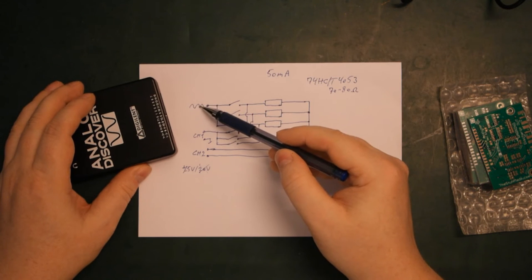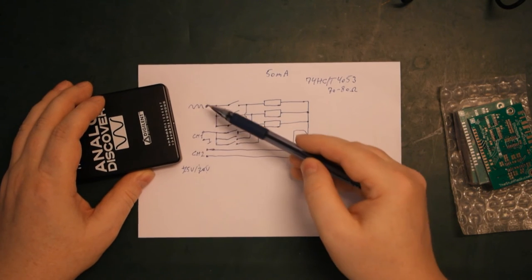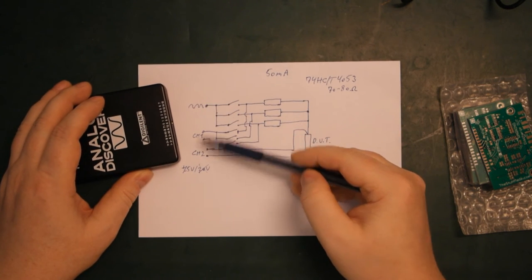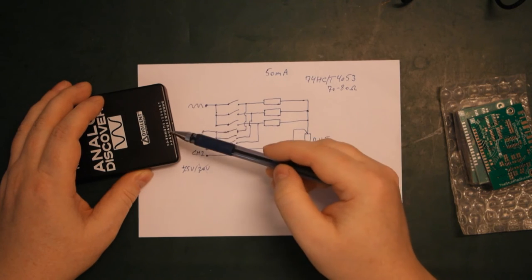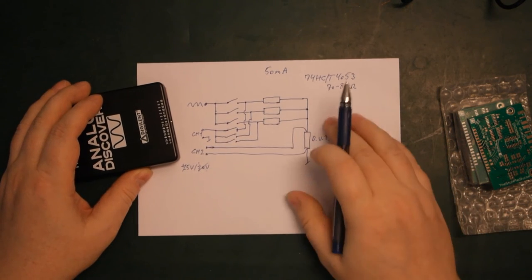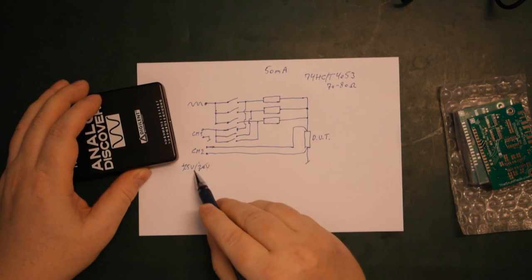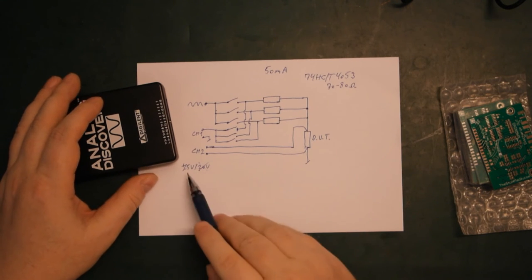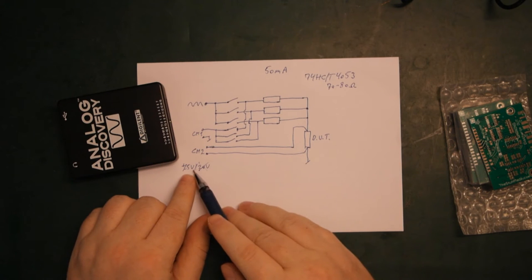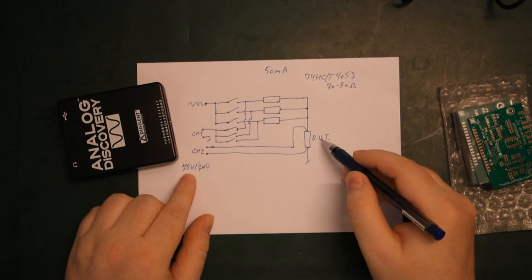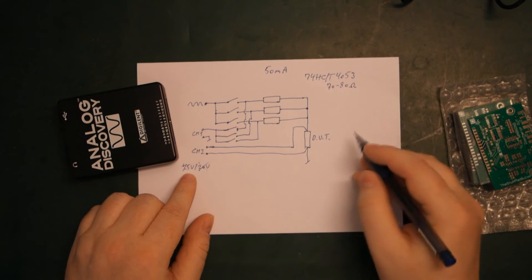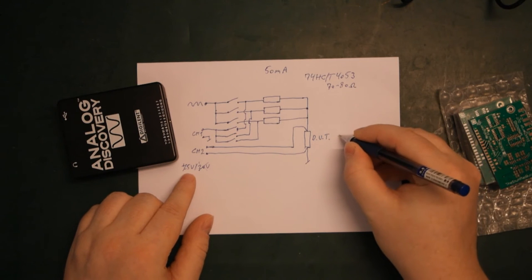The signal generator wave output here is never going to be more than plus minus 5 volts, because that's the absolute maximum it can output. So that is the only range we need. But the problem is, if we want to measure really low impedance, and here we're talking something like below one milliohm...